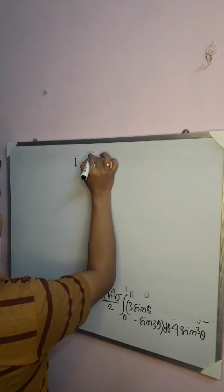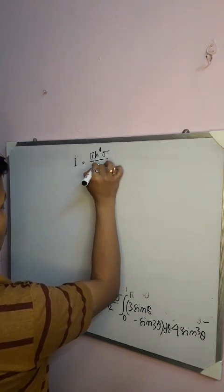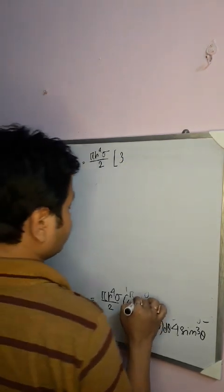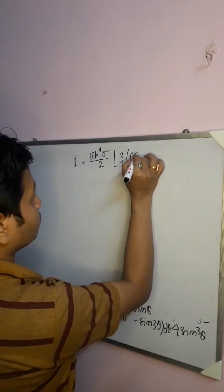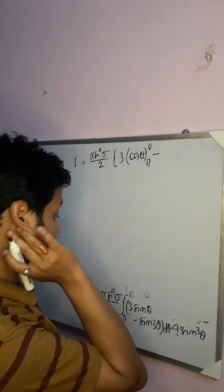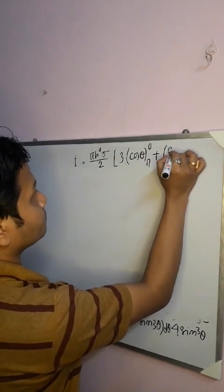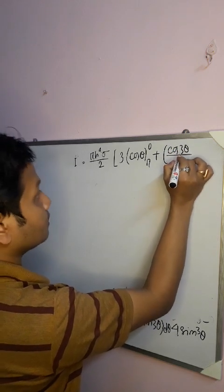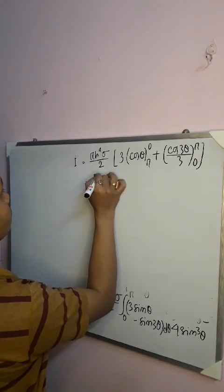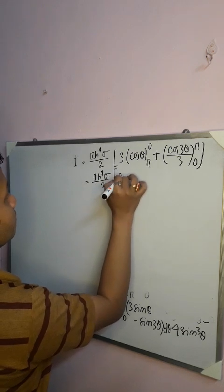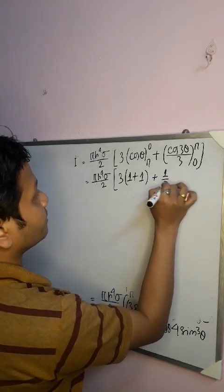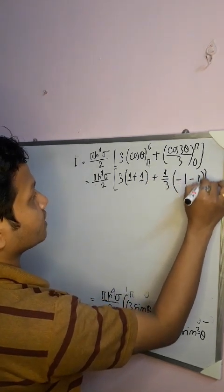Evaluating: I = (πR⁴σ/2) times [ 3(−cosθ) from 0 to π plus (cos3θ/3) from 0 to π ]. For the first term: −cosπ + cos0 = 1 + 1 = 2, times 3 gives 6. For the second term: cos3π − cos0 = −1 − 1 = −2, divided by 3 gives −2/3.